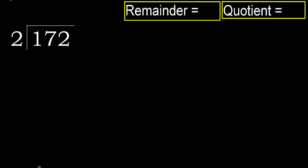172 divided by 2. 1 is less, therefore next. 17 is not less, therefore with 17: 2 multiplied by which number is nearest to 17 but not greater? 2 multiplied by 9...